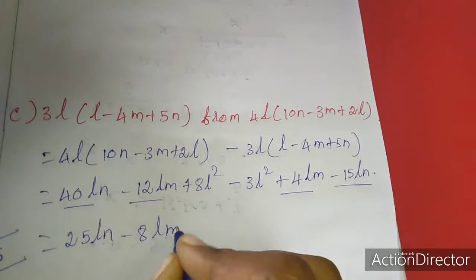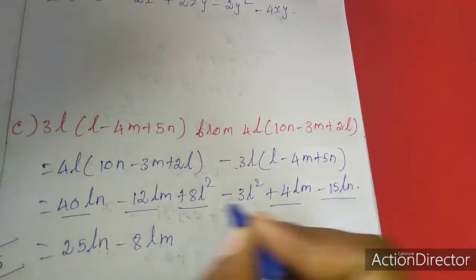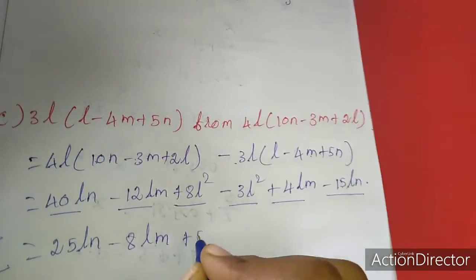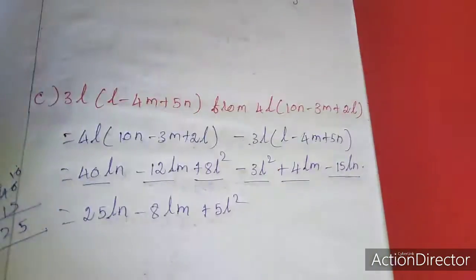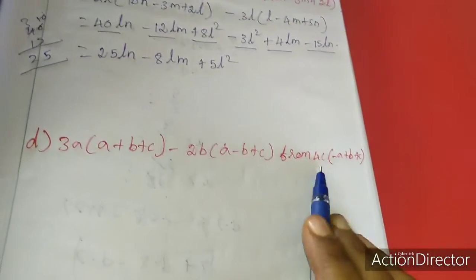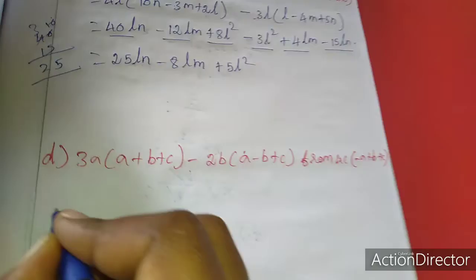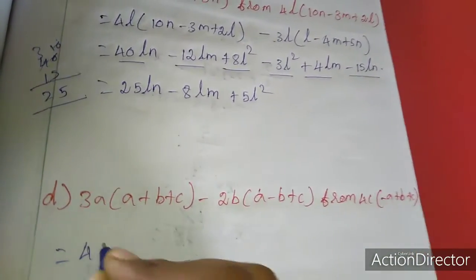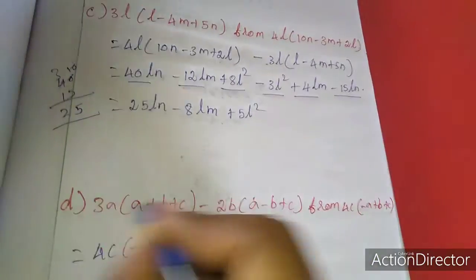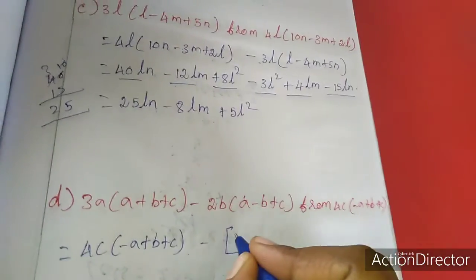40 minus 15 is 25LN, minus 12 plus 12 cancel, so we get 25LN plus 5L². That's all. For d sum, subtract: 4C - (A + B + C) minus bracket 3A(A + B + C) minus 2B(A - B + C).